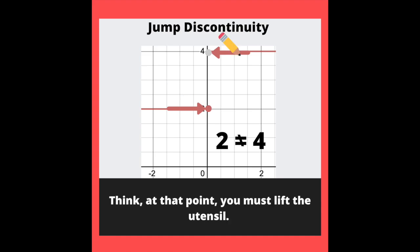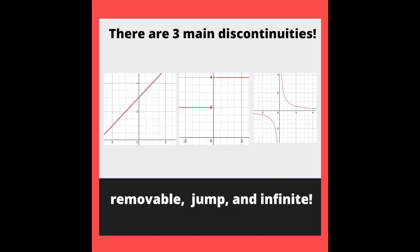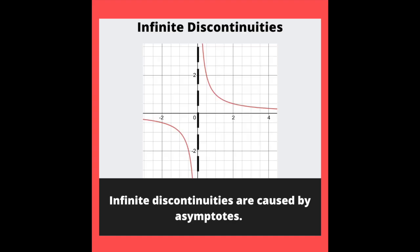at that point, you must lift the utensil. There are three main discontinuities: removable, jump, and infinite. Infinite discontinuities are caused by asymptotes.